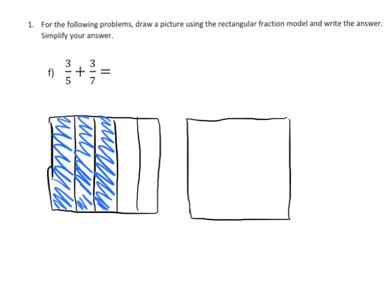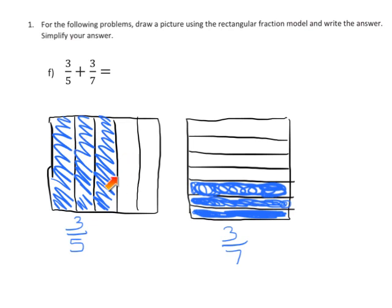Just like before, we take each of the fifths and cut them into sevenths — that's seven cuts — and then cut each of the sevenths into fifths — that's five cuts. So suddenly instead of three-fifths, we now have an array three by seven, which is 21. That gives us 21 thirty-fifths.